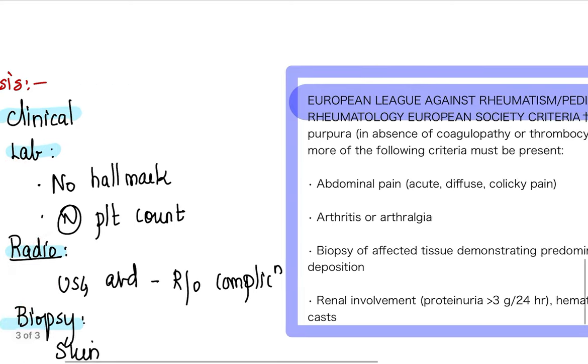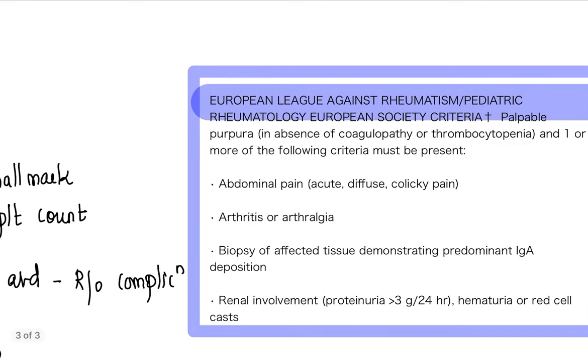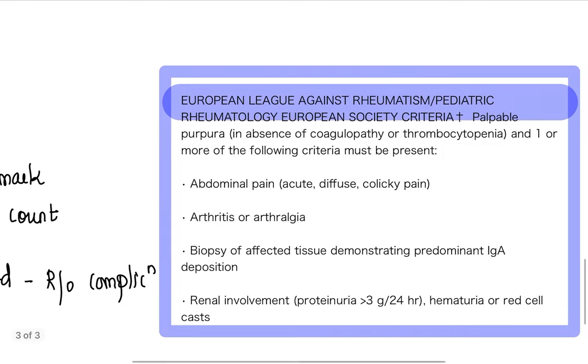It is done using the following criteria: EULAR criteria or Pinto criteria. The one criteria that is a must, that should be present, is your palpable purpura. This palpable purpura should be present in the absence of coagulopathy or thrombocytopenia. Along with this, one among the following four: abdominal pain, joint involvement, biopsy of affected tissue demonstrating your IgA vasculitis, renal involvement can be in the form of proteinuria, hematuria, or red cell casts.